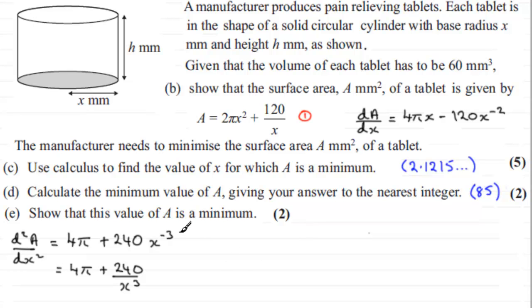So if we come down here, we can say that when x equals 2.1215 and so on, the value of d²A/dx², if you put it through your calculator, turns out to be 37.701 and so on, a positive value greater than 0. Therefore, A is a minimum.